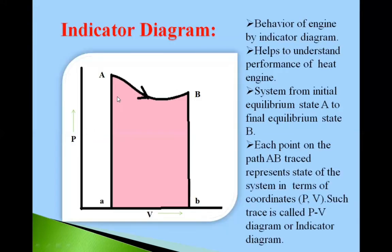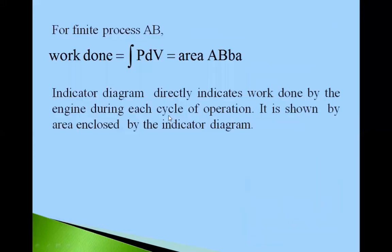So see friends, work done is given by this pink shaded area. This area under this AB curve is the work done by the system which is undergoing from A to B, changing from A to B. So area under that curve AB is the work done.